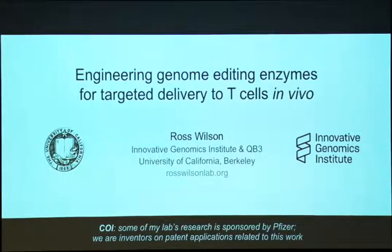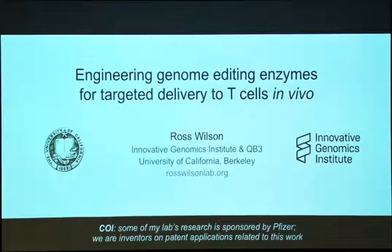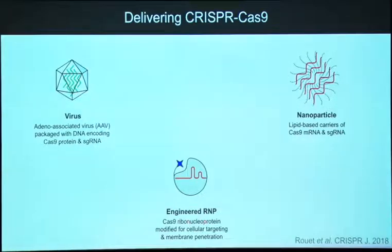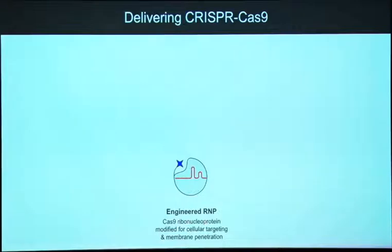A lot of what I'm going to talk about in this presentation has already been covered. The two key new ideas are that we're trying to take the Cas9 enzyme itself and turn it into an all-in-one self-contained delivery platform. One thing that helps do that is these endosomolytic peptides. You've heard plenty today and yesterday about viral vectors and nanoparticles - these things work great but have some disadvantages. I'm going to talk about how we imagine transforming the Cas9 enzyme itself into basically an ideal delivery platform.